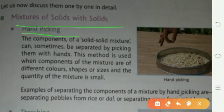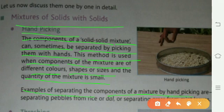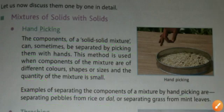Hand picking — haath se chunna. The components of a solid-solid mixture can sometimes be separated by picking them with hands. This method is used when the components differ in color, shape, and size, and the quantity of the mixture is small. Examples include separating pebbles from rice and separating grass from mint leaves.